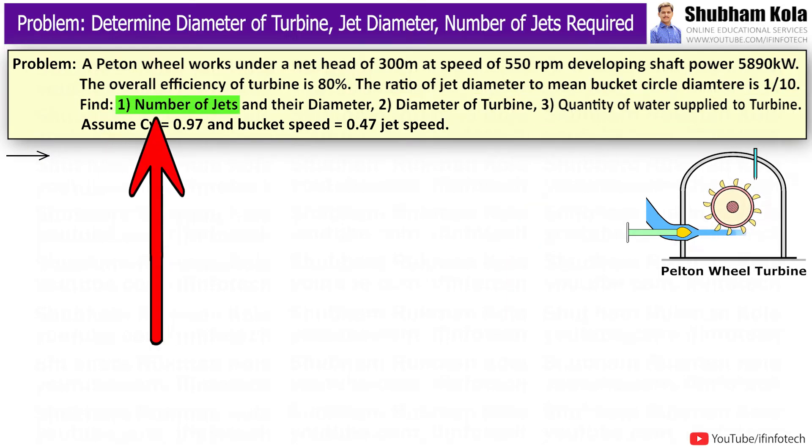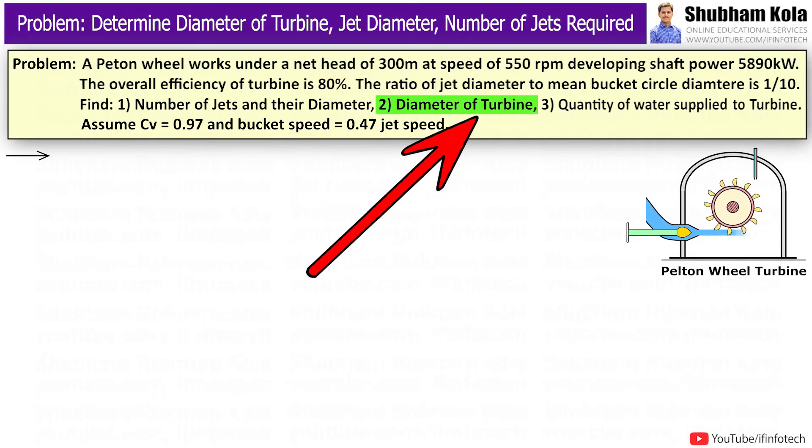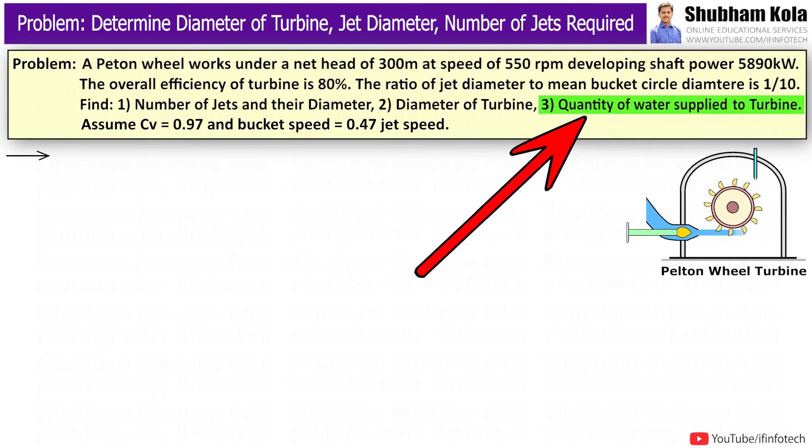The overall efficiency of turbine is 80%. The ratio of jet diameter to mean bucket circle diameter is 1 to 10. Find number of jets, their diameter, diameter of turbine, and quantity of water supplied to turbine.